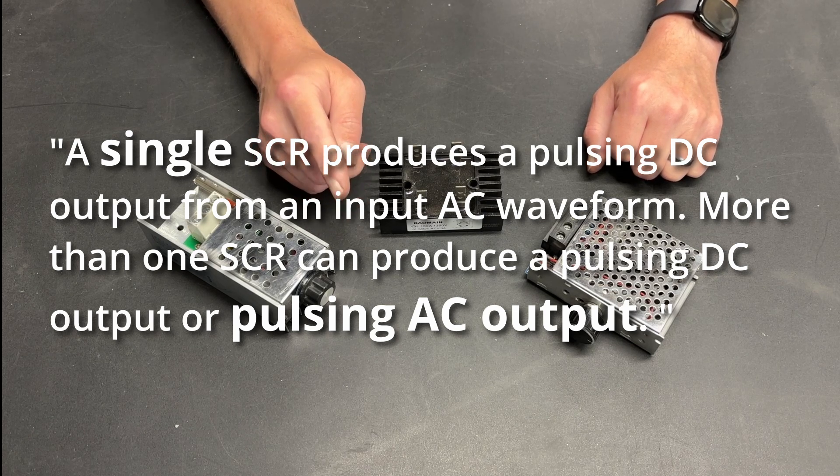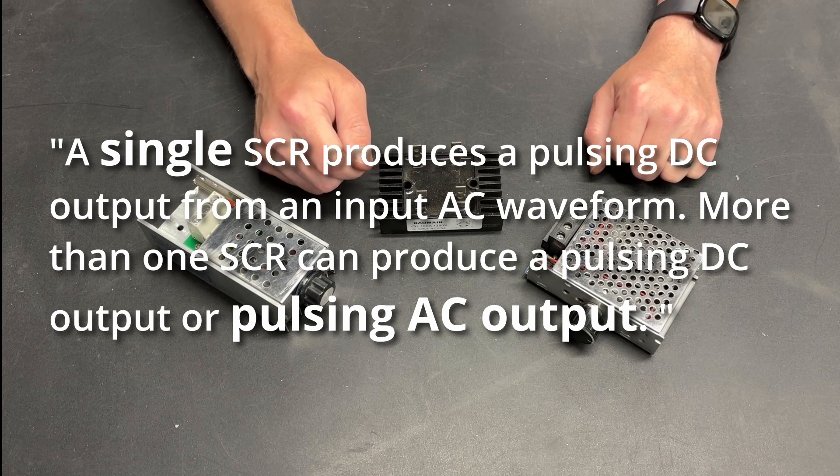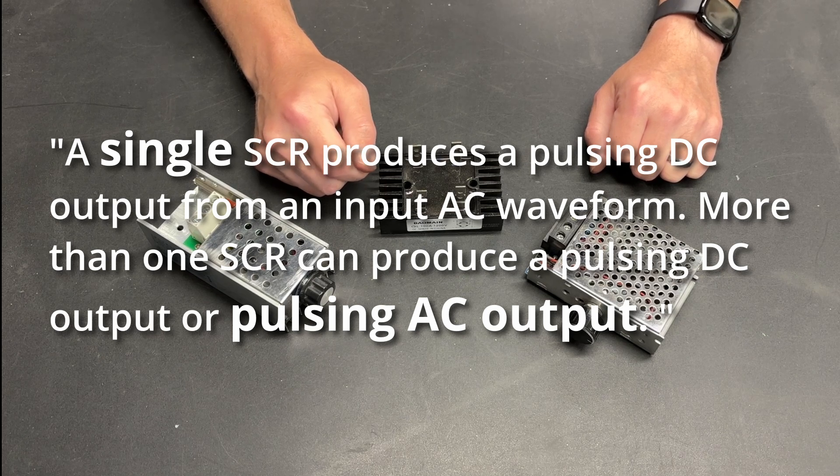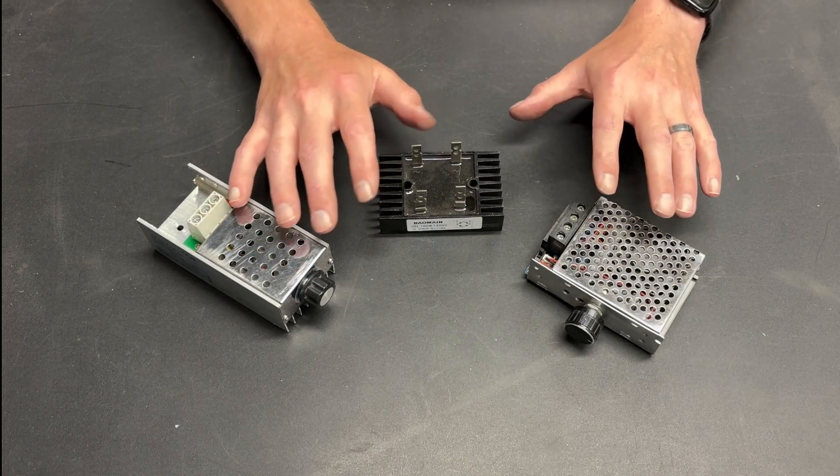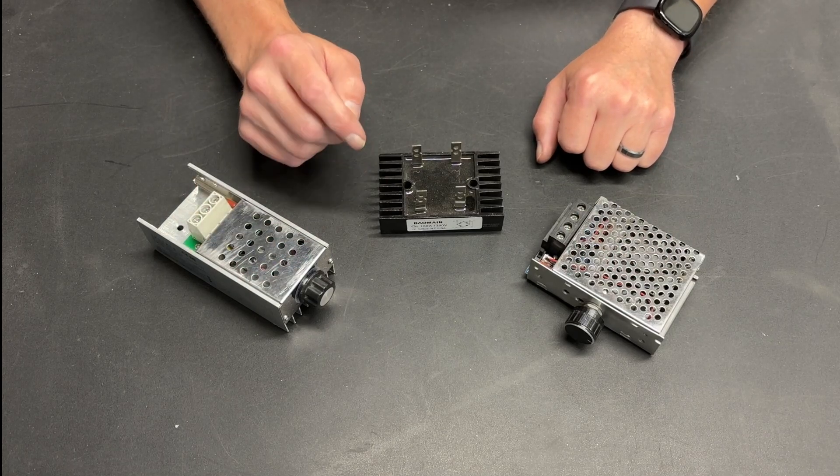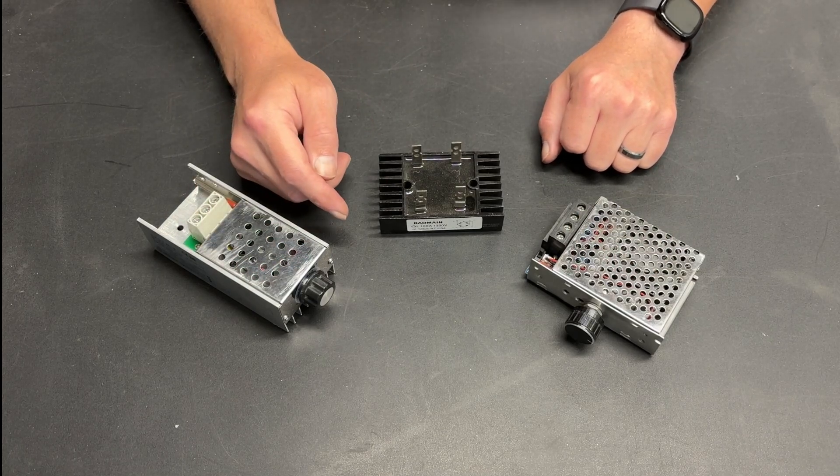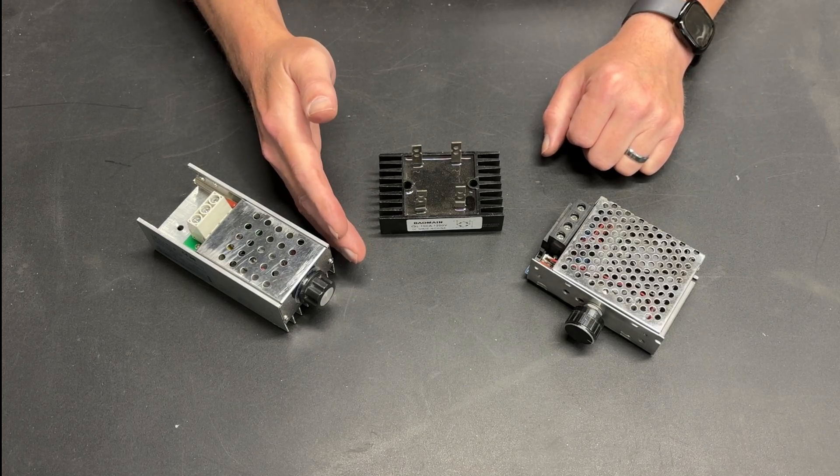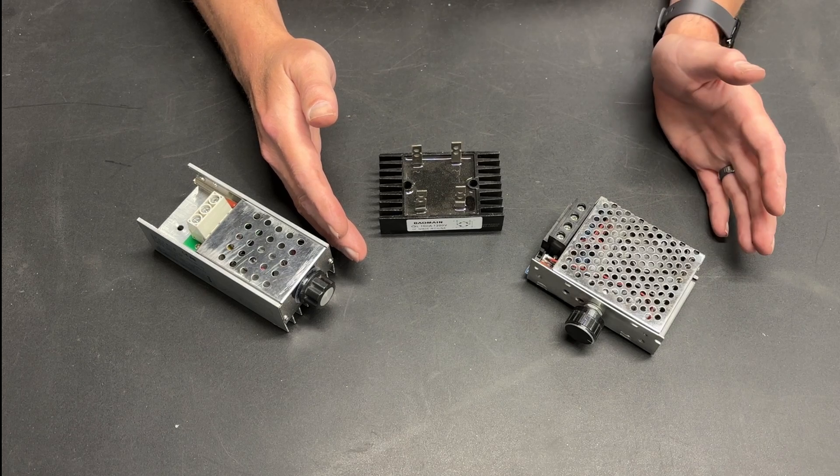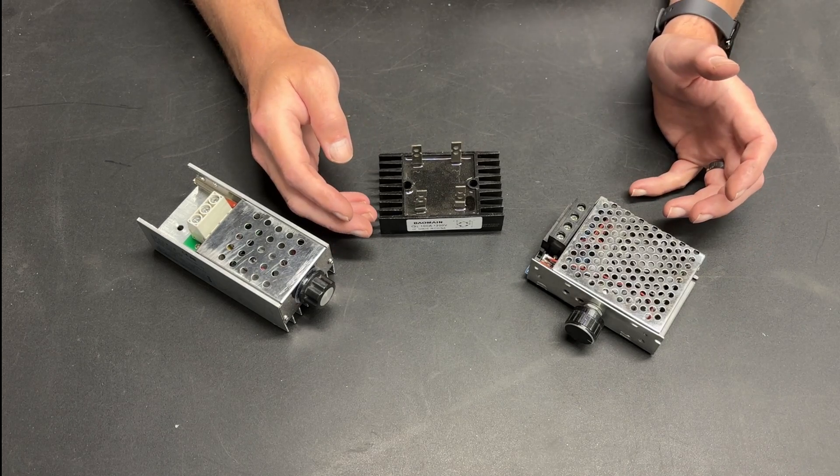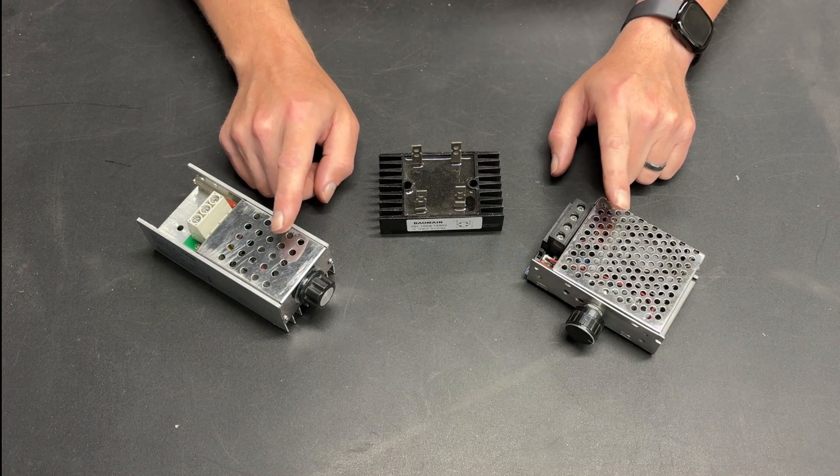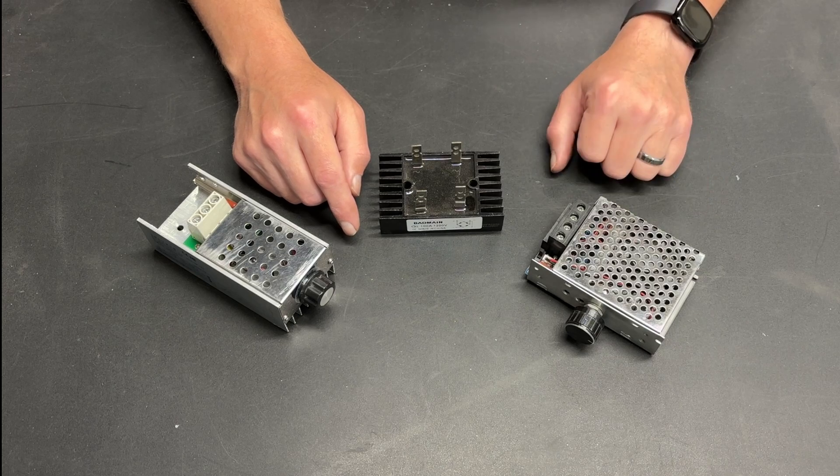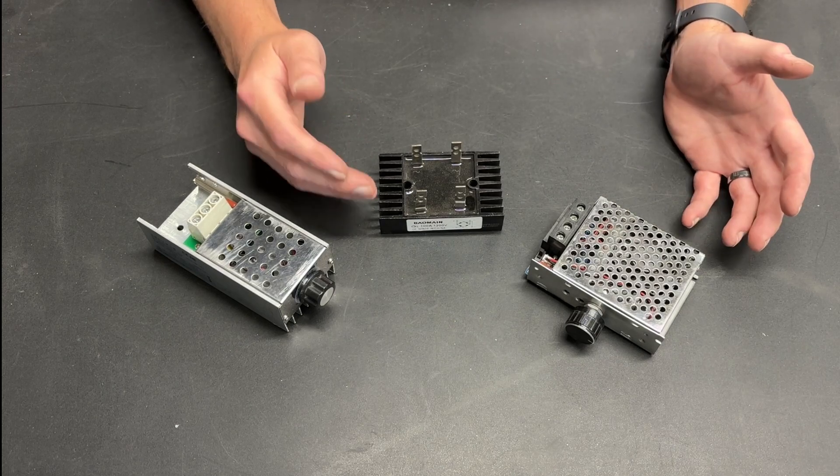More than one SCR can produce a pulsing DC output or pulsing AC output. So I thought, okay, I don't know all the components that make up these controllers. And if there is more than one SCR in there, that would make sense that the power coming in is AC, and the power coming out is also AC. So I thought the easiest way to know for sure what is in these is to open them up, take the part number off of the main switching component, and look it up.